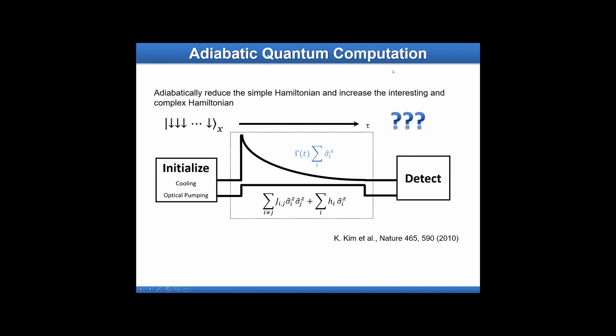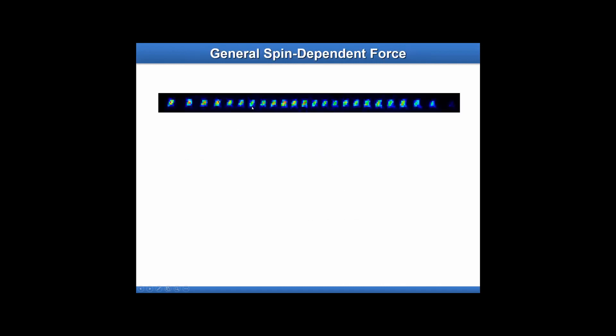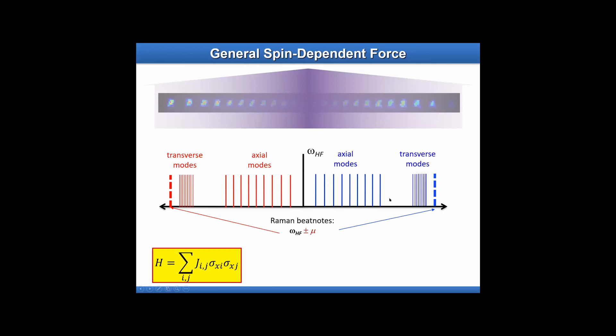Let me remind you what adiabatic quantum computation is. We want to know the ground state of a target Hamiltonian. We start from a well-defined state that is easy to prepare — in this case everything in the down state, which is a normal initialization. Then we slowly reduce the trivial Hamiltonian's strength and relatively increase the Hamiltonian of interest. To generate this Hamiltonian of interest: instead of individually selecting and applying lasers, if we just apply a global beam, this more or less automatically generates the target Hamiltonian.